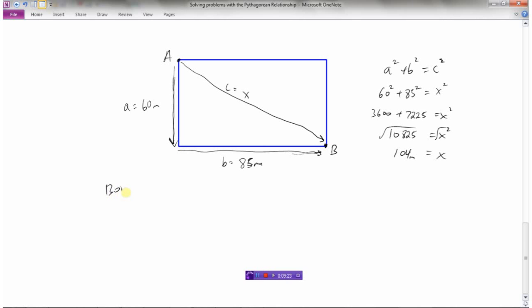So I now know that Bob runs 104 meters. And everyone else, they would have had to run 60 plus 85, which is a total of 145 meters. So if everyone else runs 145 and Bob only ran 104, then Bob ran 41 meters less than what everyone else had to run.